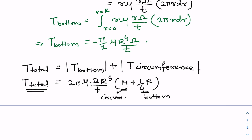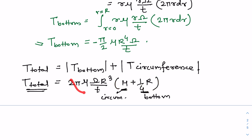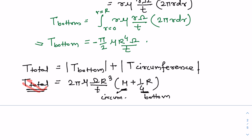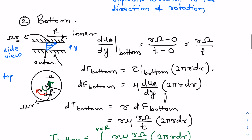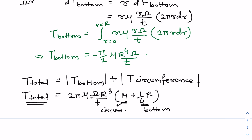As you can see, if we measure the torque acting on the inner cylinder while rotating it at constant angular velocity omega, the radius R, the fluid film thickness t, and the cylinder height h are all fixed. The only unknown is the dynamic viscosity mu. So by measuring the torque, we can directly calculate the dynamic viscosity of the fluid.